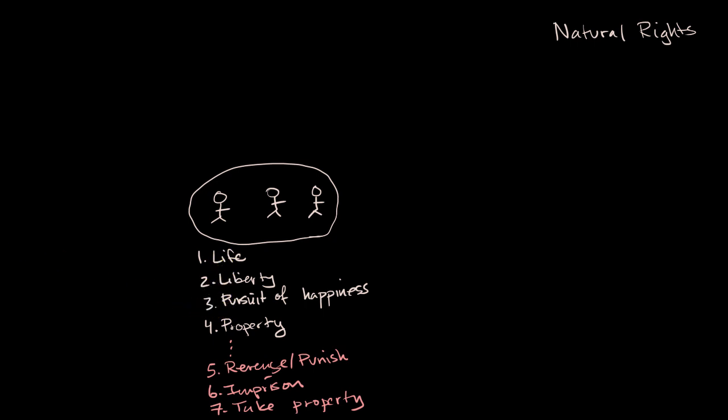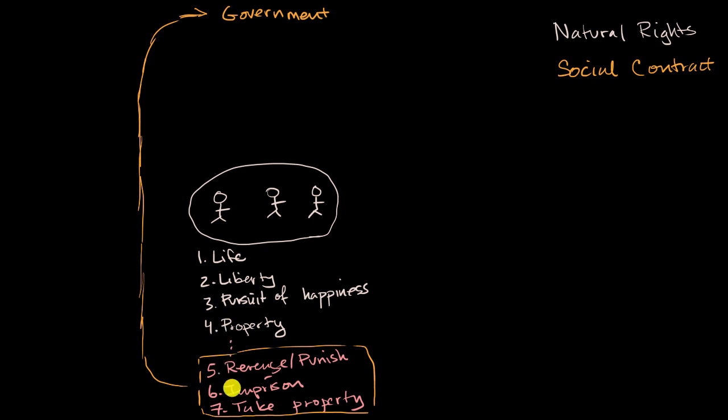And so the idea behind social contract is, well, what if we as a society decide to give up these rights as an individual and we give them to something we call a government. So we'll give these rights to a government and in exchange the government should protect my other rights. Not only these natural rights, but maybe I have other rights that I will expect my government to protect. And that notion is what we talk about in the social contract video as a social contract. Which is a nice term to know. We're giving up rights to the government in exchange for the government doing things for us.